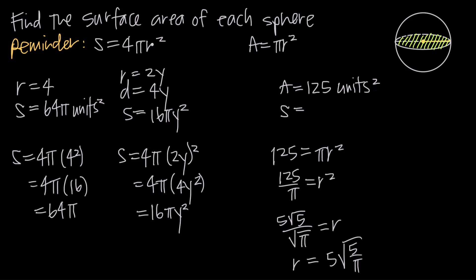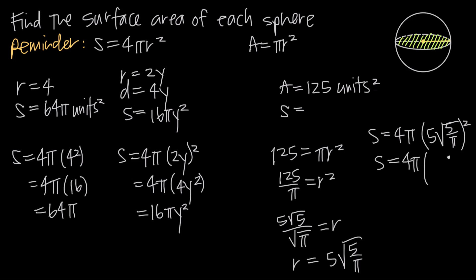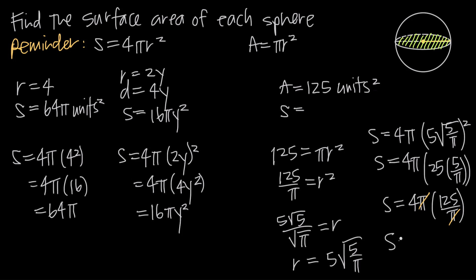Now we have a radius to plug into our surface area formula. Surface area equals 4 times pi times r squared, so we plug in (5√5 / √pi) squared. Squaring gives us 25 times 5 over pi, which is 125 over pi. Multiplying by 4 pi, the pi cancels, leaving 4 times 125, which is 500. So the surface area is equal to 500 square units.